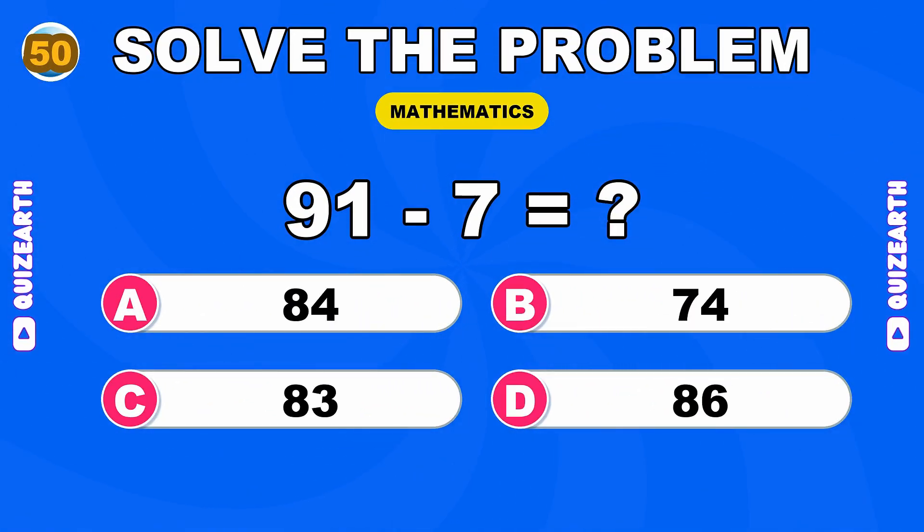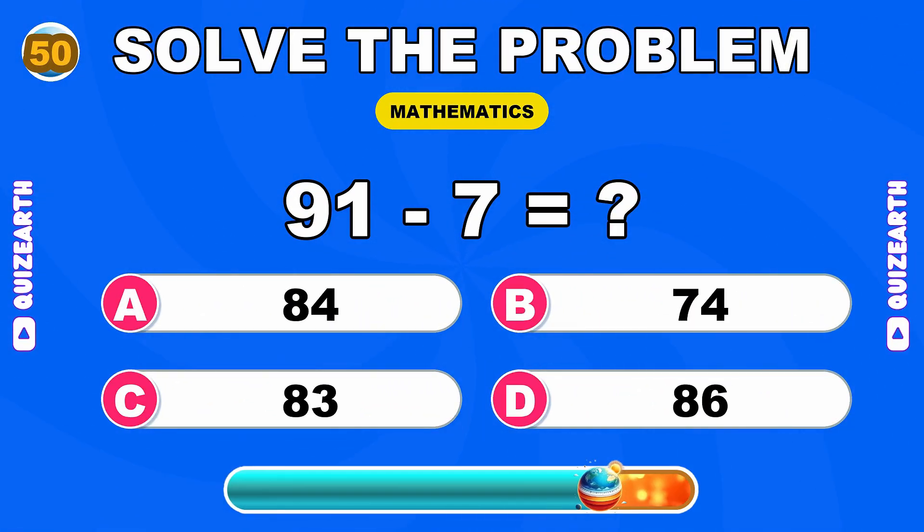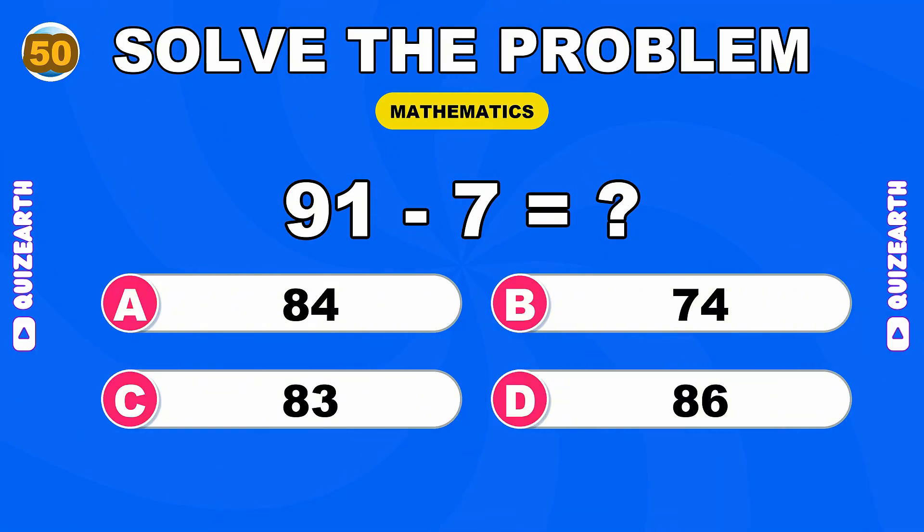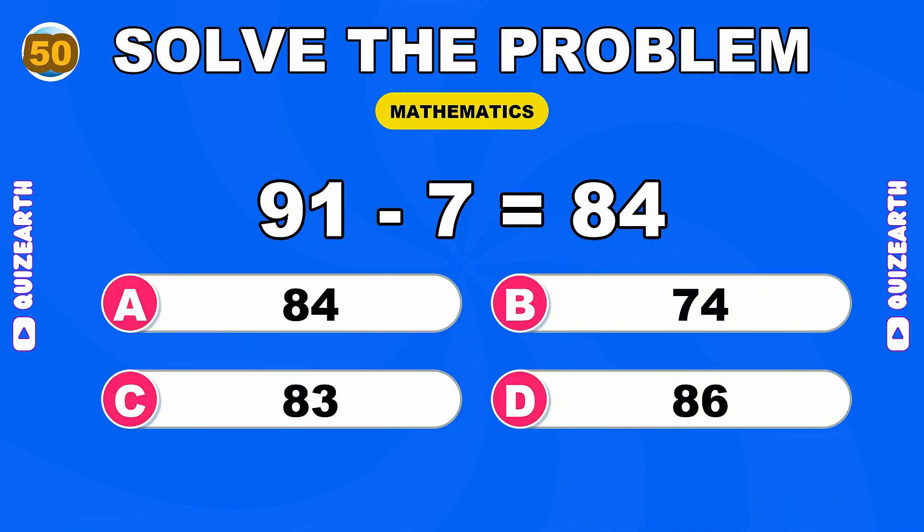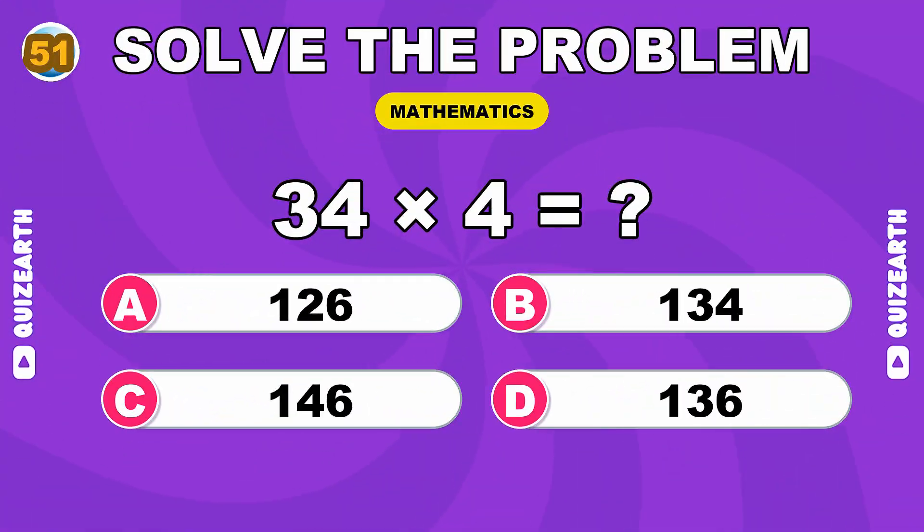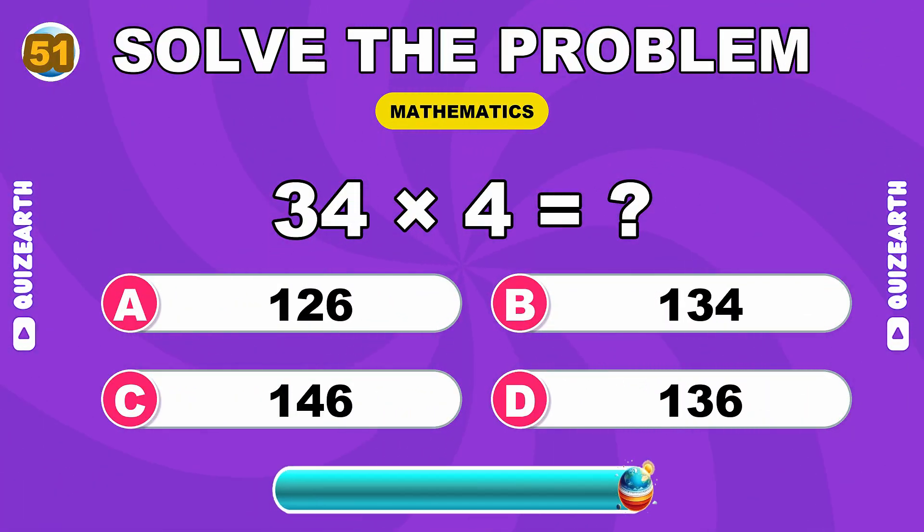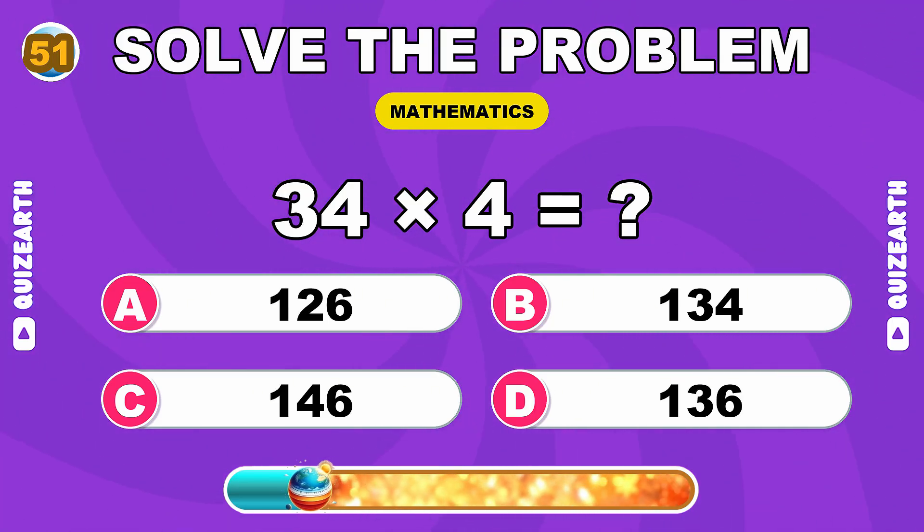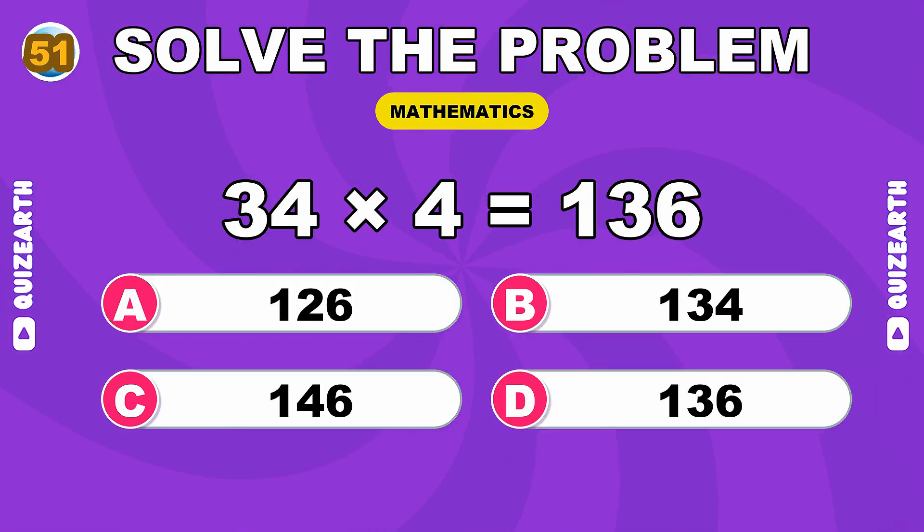How much is 91 minus 7? Elite performance, 84. What do you get when you multiply 34 by 4? Absolutely electric, 136.